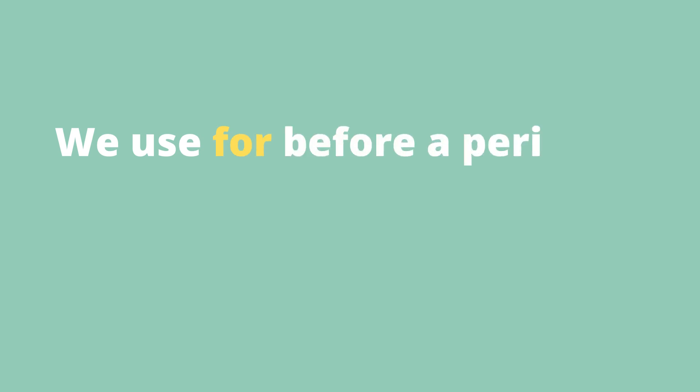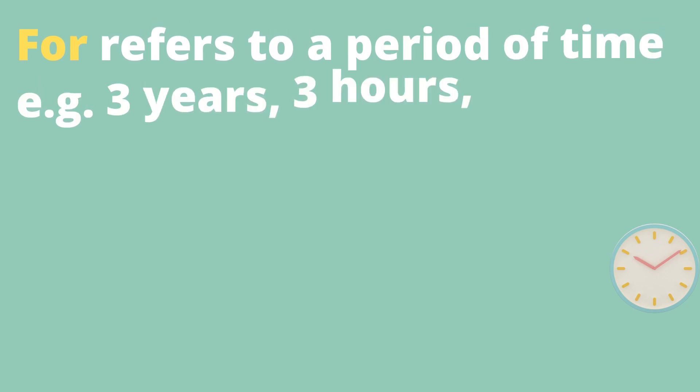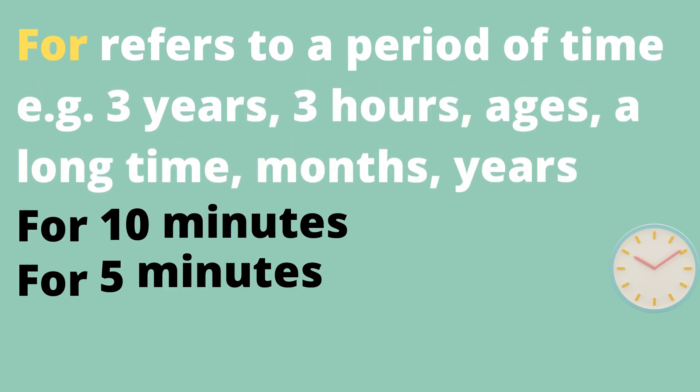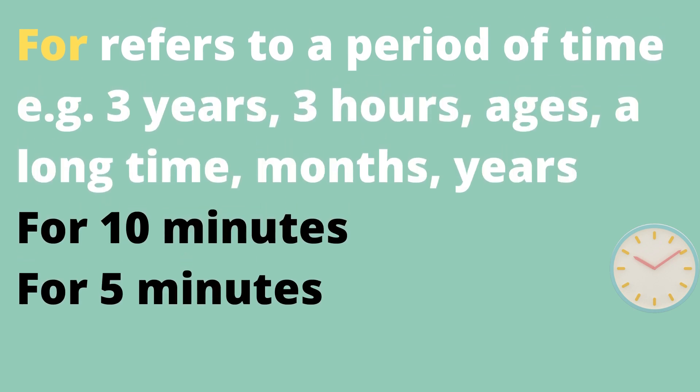We use 'for' before a period of time. For refers to a period of time, for example: 3 years, 3 hours, ages, a long time, months, years, for 10 minutes, for 5 minutes.